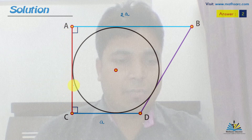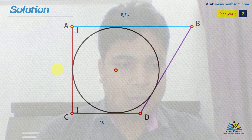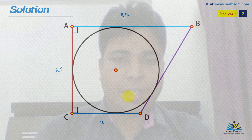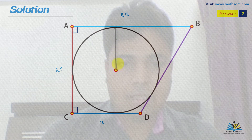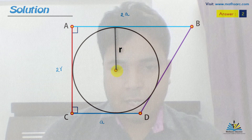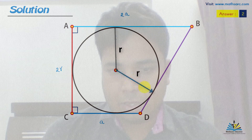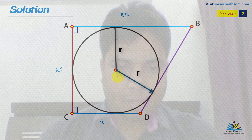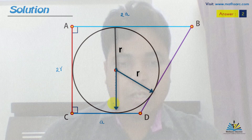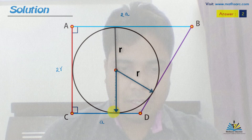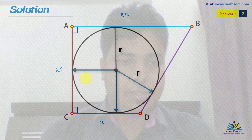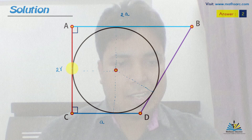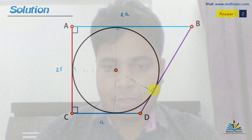The radius is R. If we join the center to the points of tangency, each of those segments will also be of length R. Since the sides are tangent to this circle, the angle at the point of contact becomes 90 degrees.